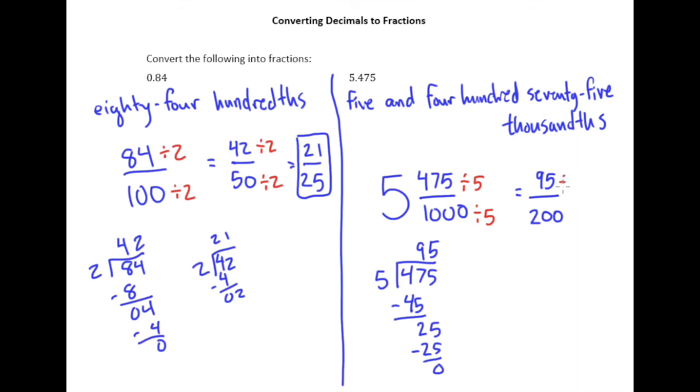Okay, and so 200 divided by 5, again 5 goes into 20 four times, but then there's one more zero, so 200 divided by 5 is 40, and then I'll go ahead and just do my long division here. 5 goes into 9 once, and 5 goes into 45 nine times, so we have a 19 on top, so our reduced answer here is 19 fortieths.